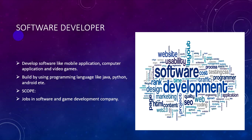To become a software developer, you need to learn programming languages. Routine programming languages like Java, Python, and others are used to develop software.